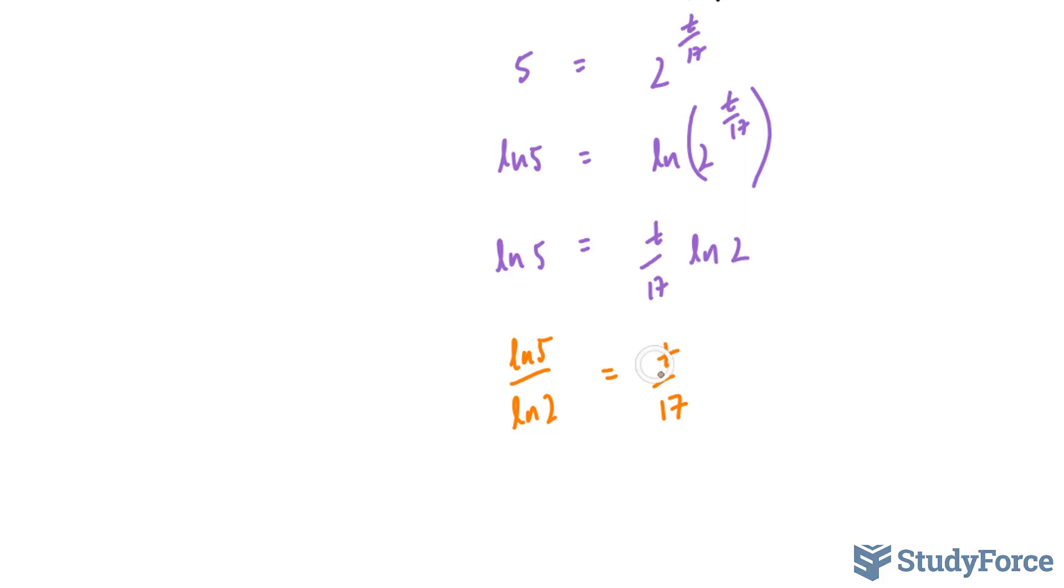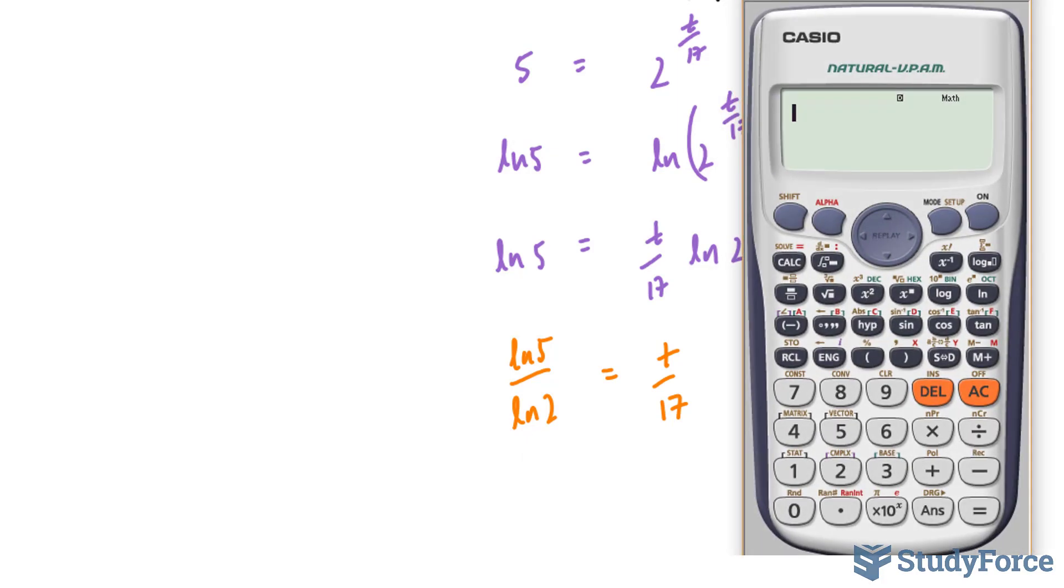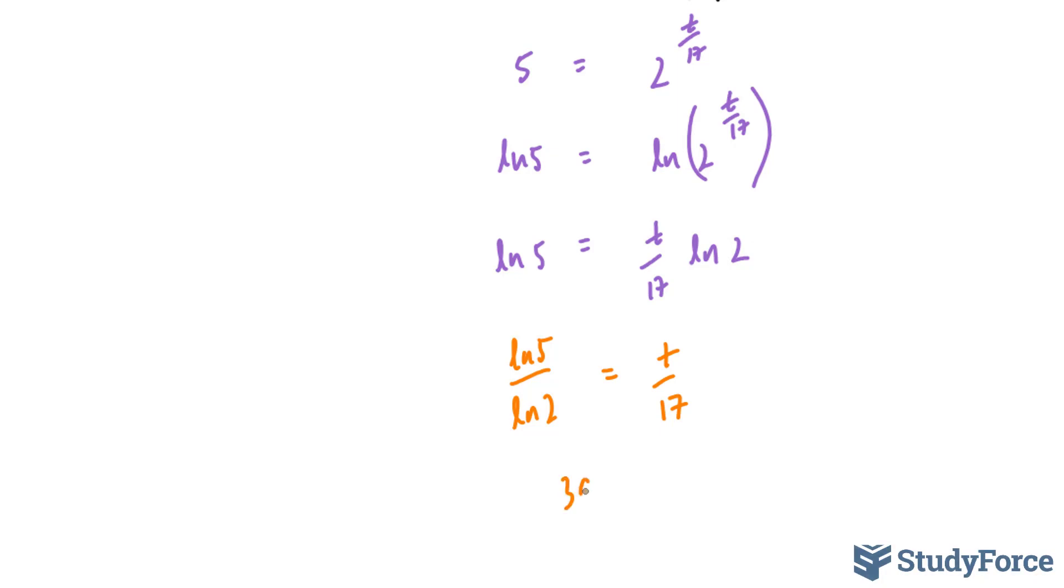And lastly, to isolate for this t, I'm going to multiply both sides by 17. And I'll use the calculator to do this. So we have 17 times this, so bracket ln 5 divided by ln 2, close bracket, close bracket, and we end up with 39.4727.